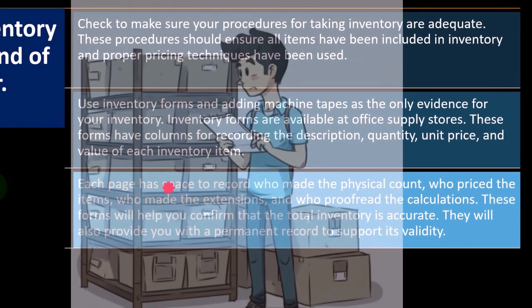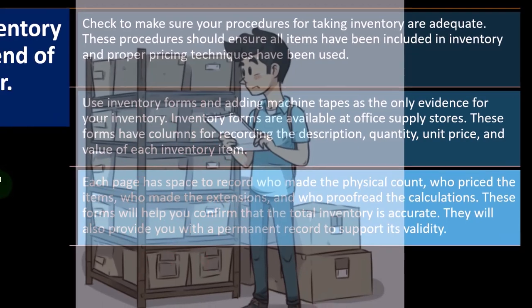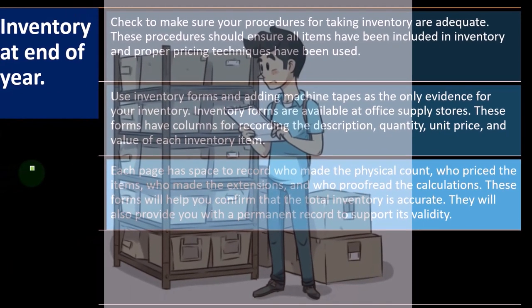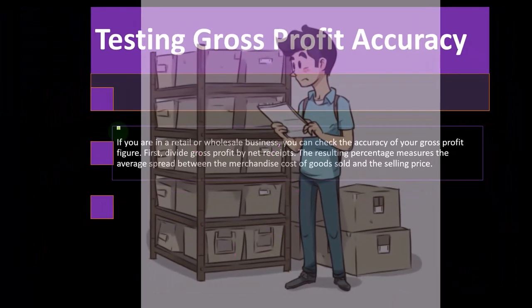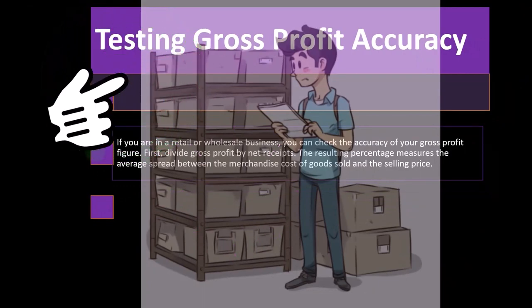Each page has space to record who made the physical count, who priced the items, who made the extensions, and who proofread the calculations. These forms will help you confirm that the total inventory is accurate and will also provide you with a permanent record to support its validity. Inventories are discussed in chapter two.